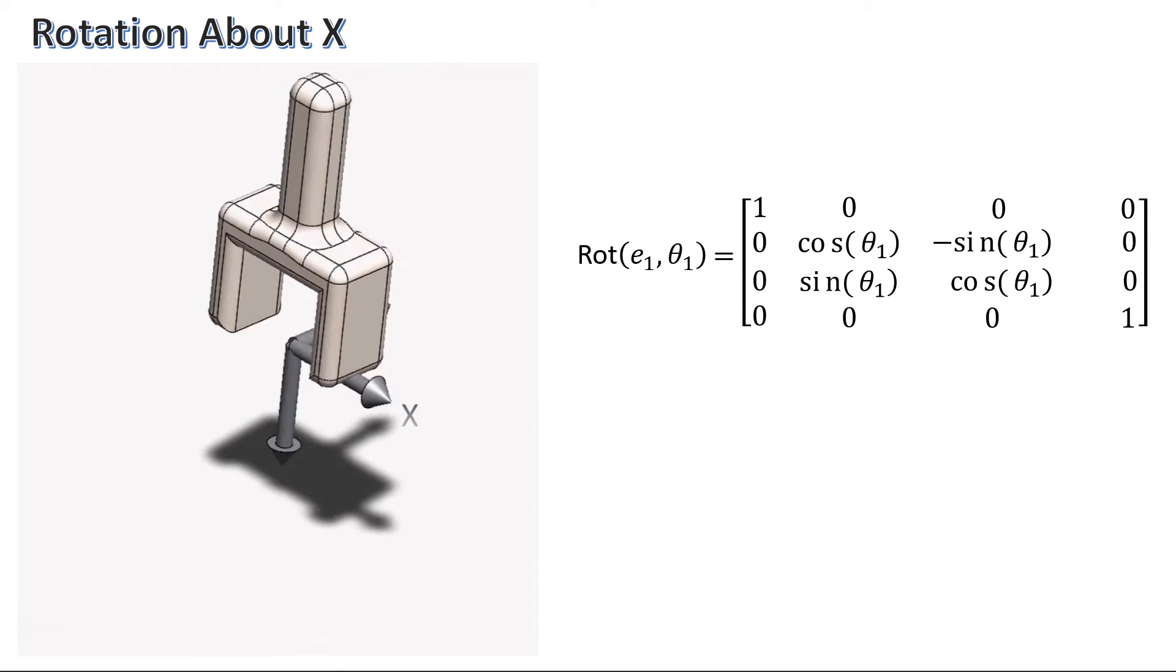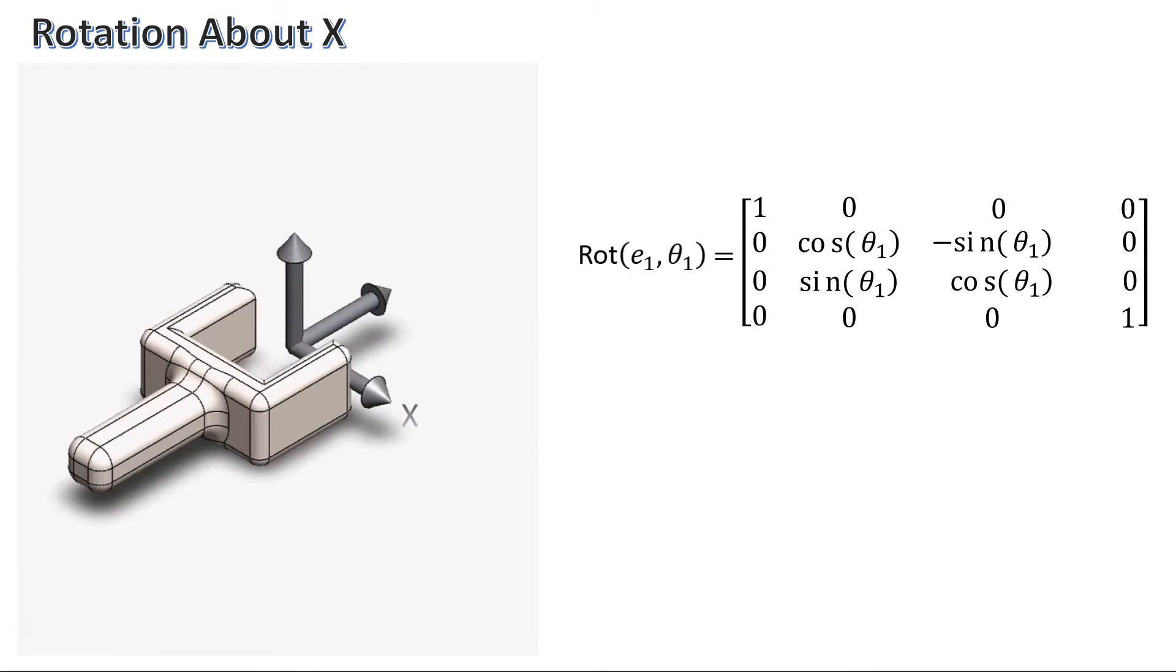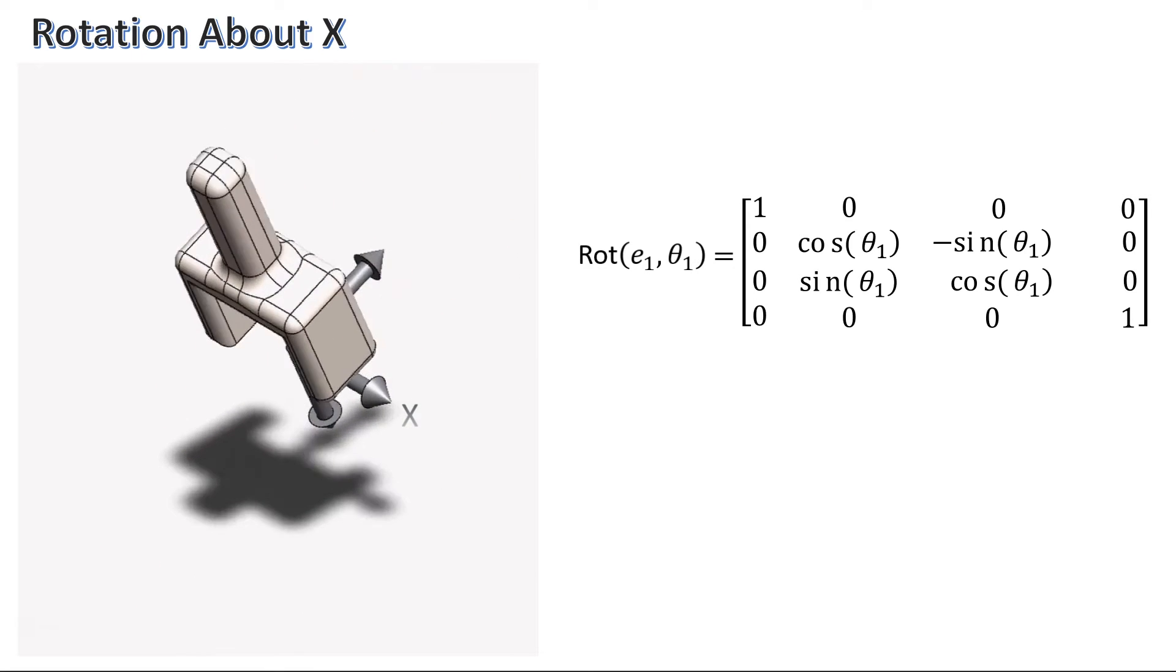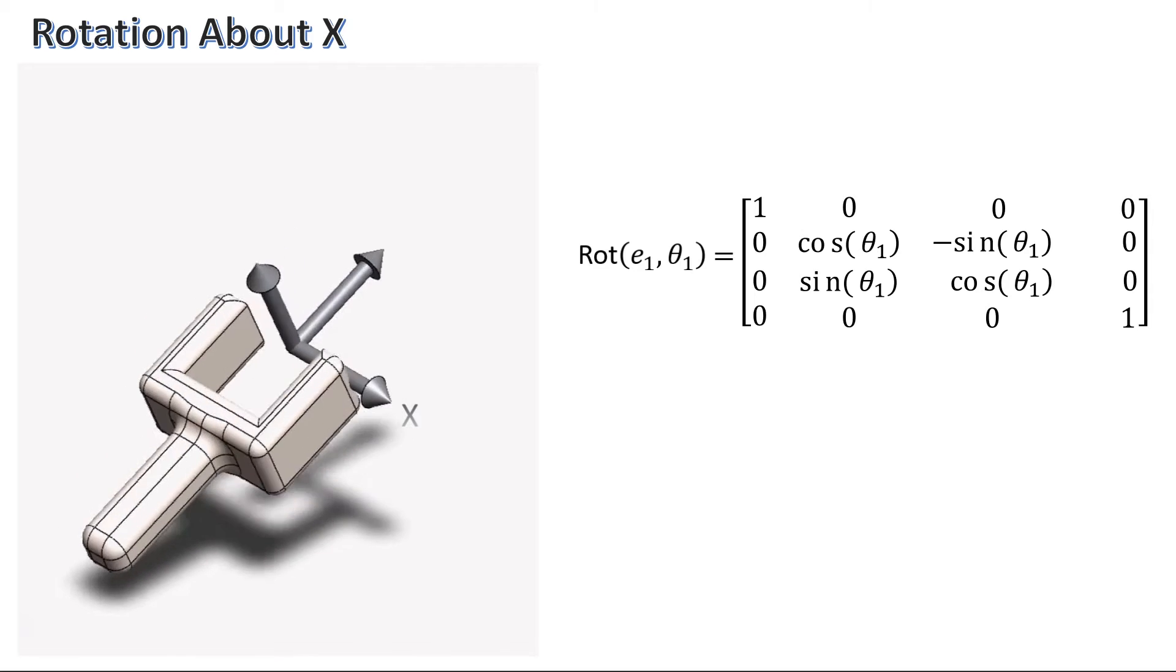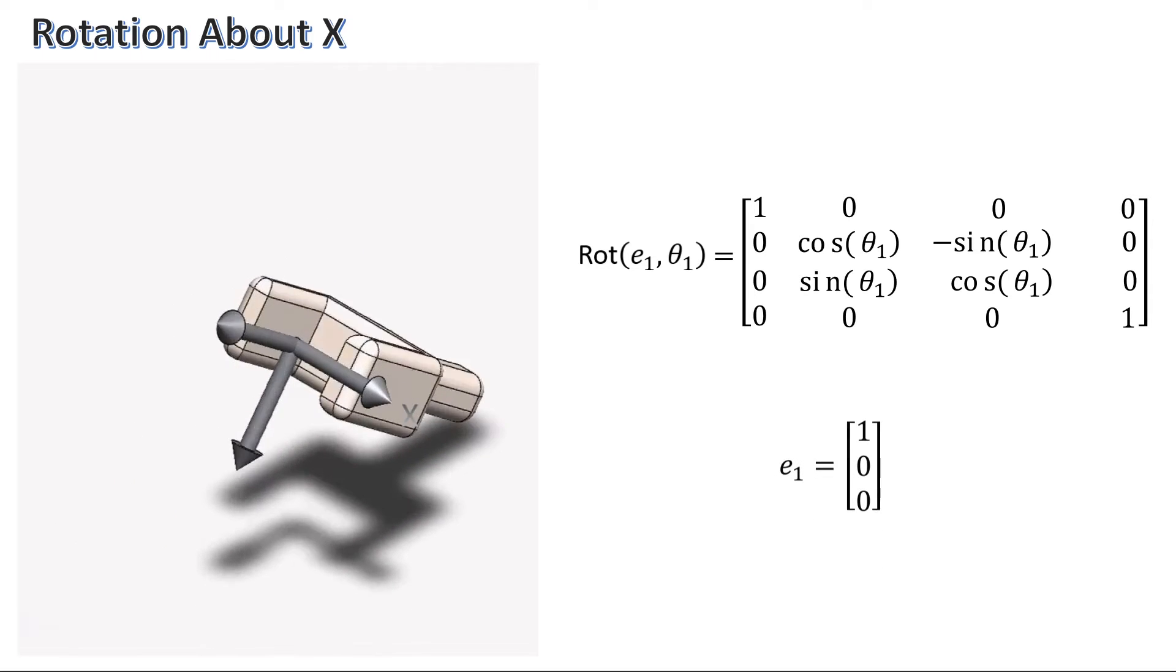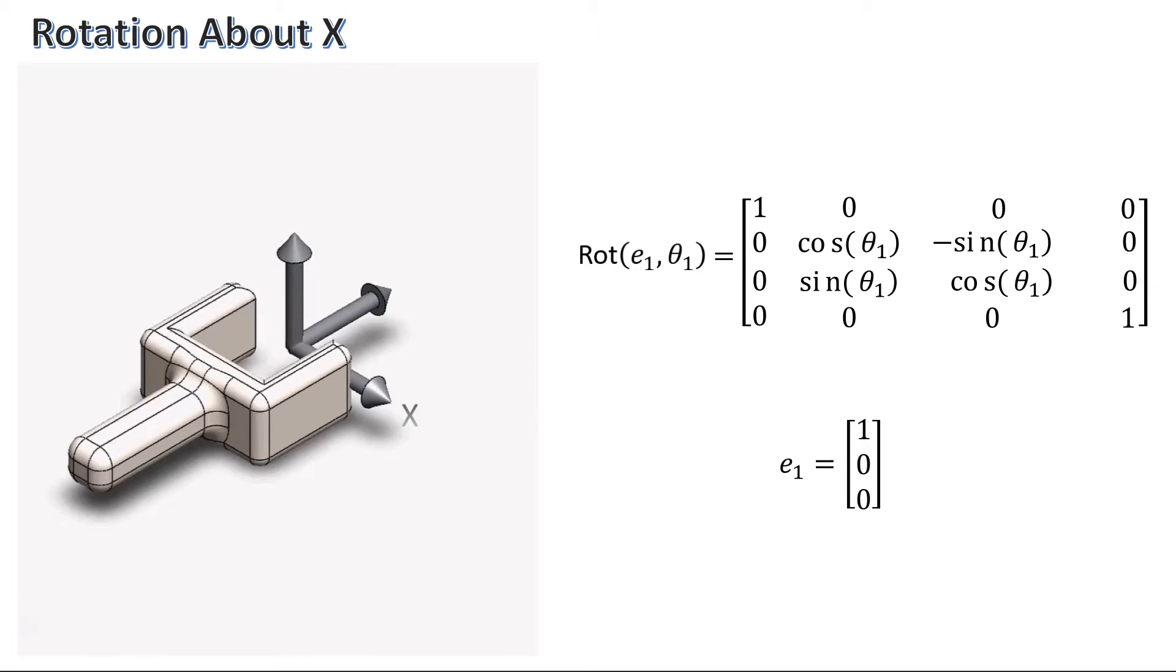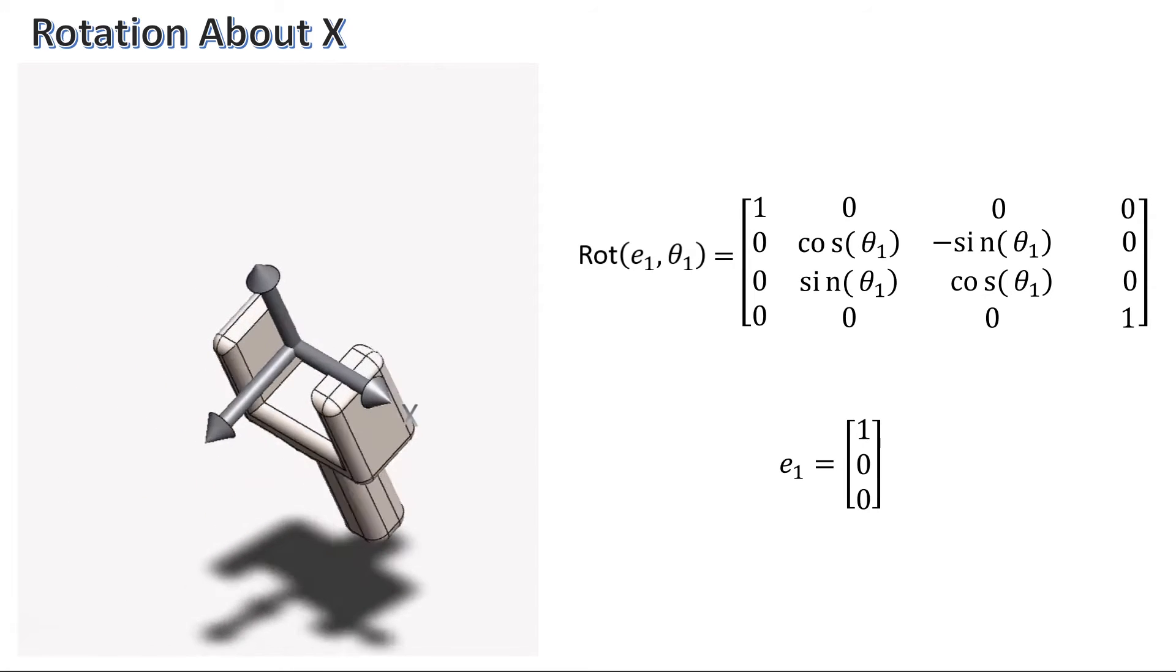You may be curious about the notation I am using for the rotation matrix. The first parameter I have in my rot operator is called a basis vector, which is just a fancy way of referring to one of your frame's axes. In this case, e1 tells you that the rotation is occurring around the x-axis. The second parameter, theta1, tells you how many degrees to rotate about that basis vector.